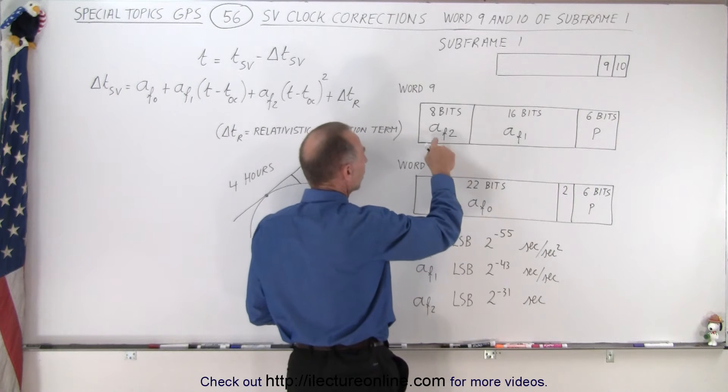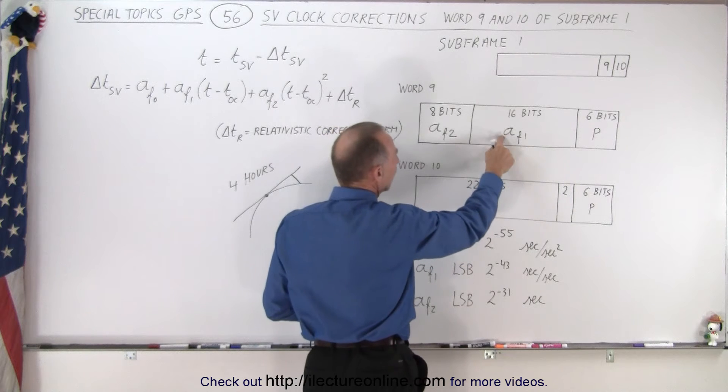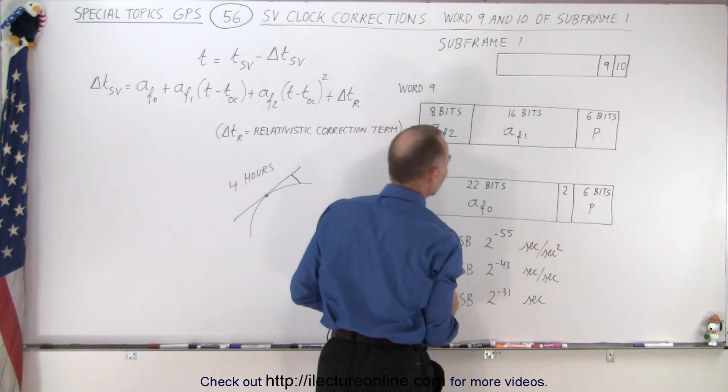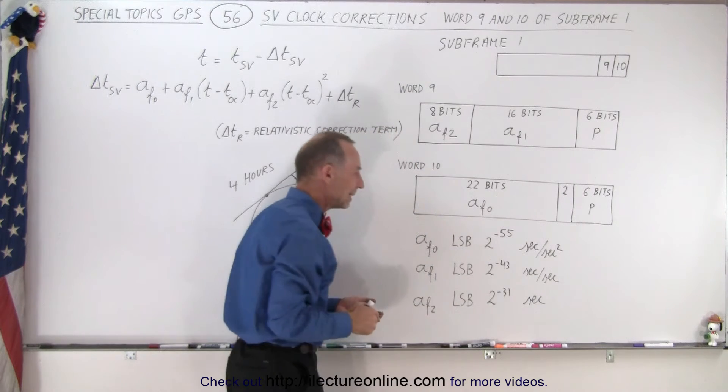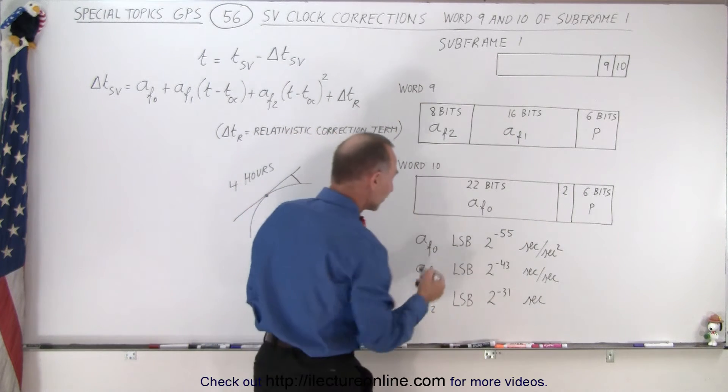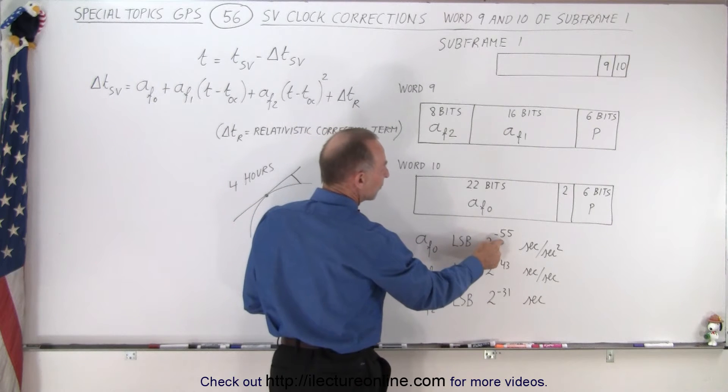In word 9 we have what we call the A sub F2 which is 8 bits long. We have an A sub F1 which is 16 bits long and A sub F0 which is 22 bits long. The value of the LSB of each of those, notice that for the AF0 the LSB is 2 to the minus 55.